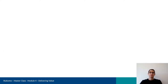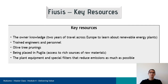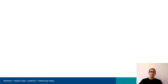Looking at our case — the only micro-cogeneration plant of this kind in the world — resources include the owner's knowledge, trained engineers and personnel, and olive tree prunings. In addition, the company is placed in an area with access to rich sources of raw materials. And finally, plant equipment and special filters that reduce emissions.